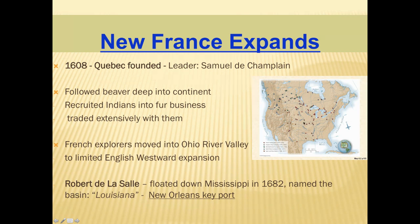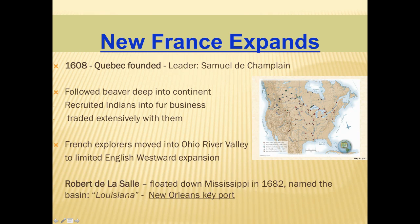The forts along rivers and tributaries connected with the Mississippi, which was the lifeline for the French. To export beaver furs for wealth, they needed to come down the Mississippi through Louisiana and the port at New Orleans. Robert de La Salle floated down the Mississippi in 1682 and claimed New Orleans as the key port. The Ohio River Valley was doing two important things: stopping English westward expansion and connecting all the forts into one economic system running through New Orleans, making inevitable conflict with British westward expansion.